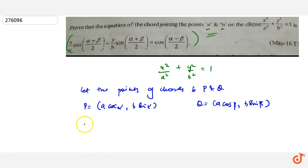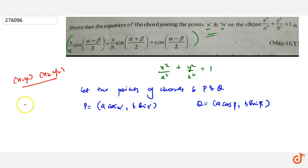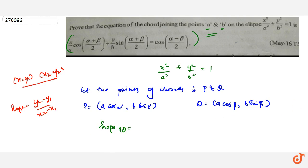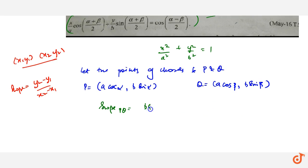The slope of PQ — if we have two points (x1, y1) and (x2, y2), the slope is (y2 - y1)/(x2 - x1). So the slope of PQ equals (b·sinα - b·sinβ) / (a·cosα - a·cosβ).